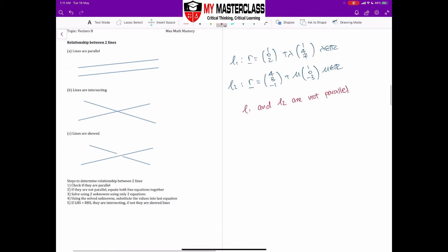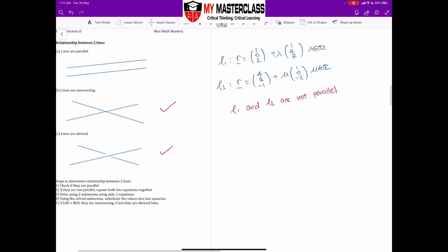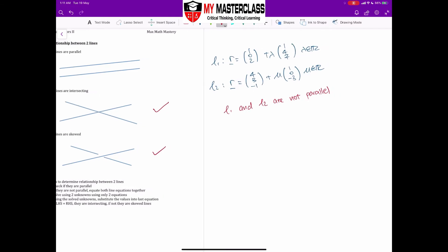So if the lines are not parallel, what I'm going to do is determine if they are intersecting or they are skewed. How do I determine if they are intersecting or skewed? I'm going to assume that both of them intersect. So I'm going to set (1 + lambda, 4 lambda, 2 + 7 lambda) equal to (4 + mu, 3, -1 - 3 mu).